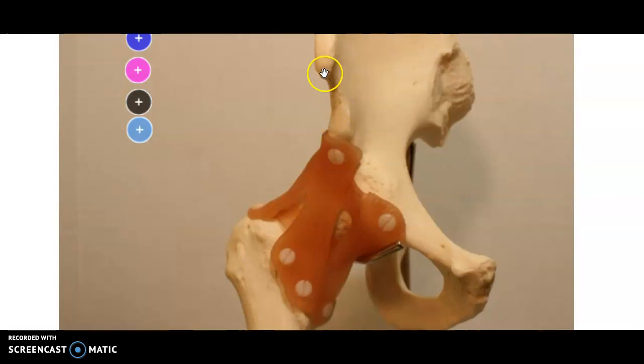This is the anterior superior spine. That's the anterior inferior spine. It has a ligament that goes to the greater trochanter right there. This is called the iliofemoral ligament.